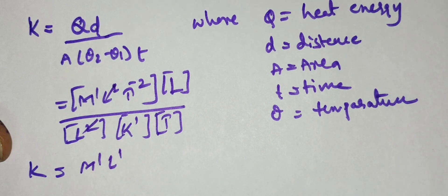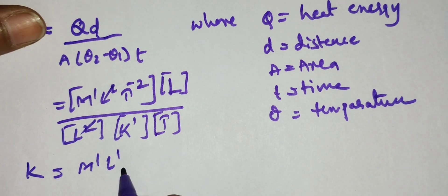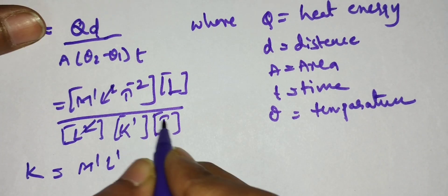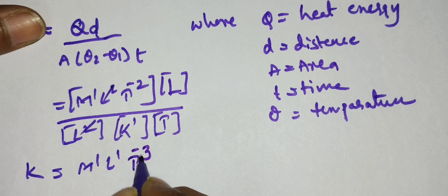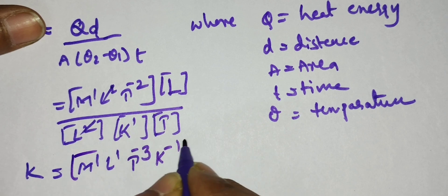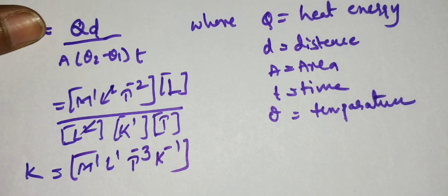So in denominator it is 3 is there. So in numerator it will be minus 1. So t power minus 3 and kelvin power minus 1, that is k to the power of minus 1. So this is the dimension formula of thermal conductivity.